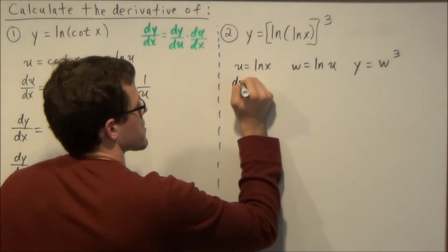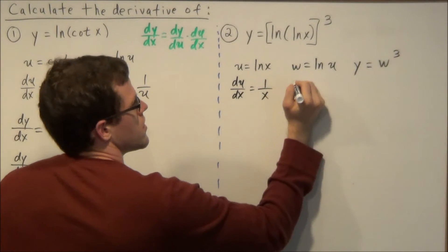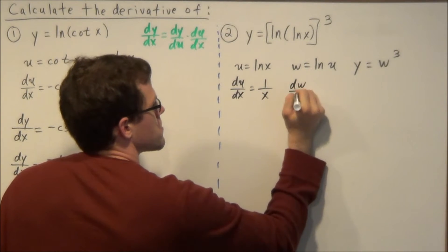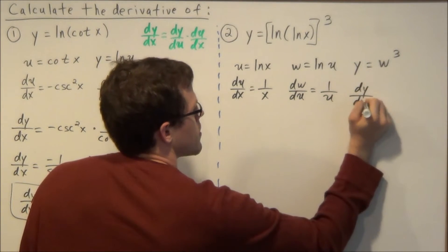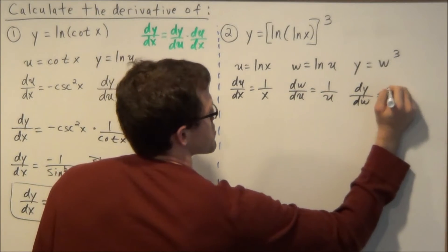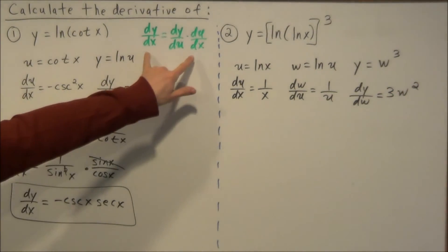So here we're going to calculate du dx, which is just one over x, dw du, which is one over u, and then dy dw, which we just use power rule, this is three w squared. So then to find dy dx, once again we're using chain rule, however this time around we have three derivatives to multiply.